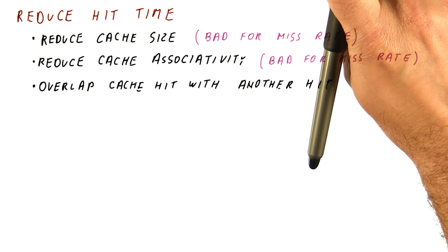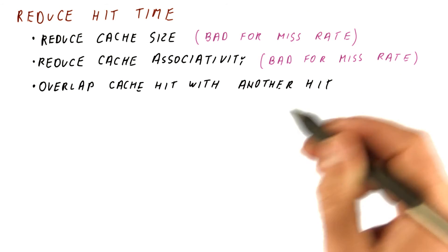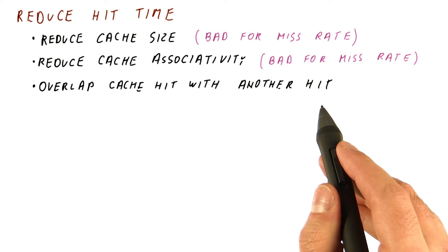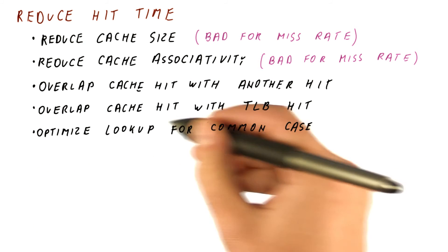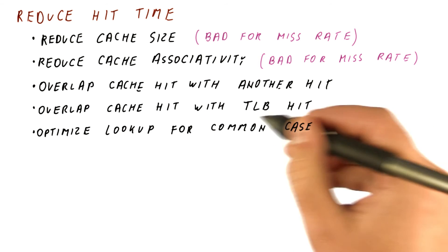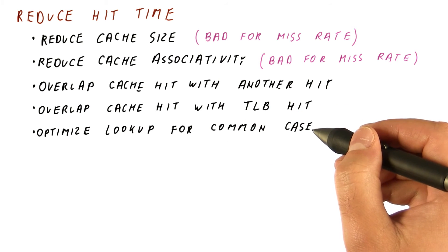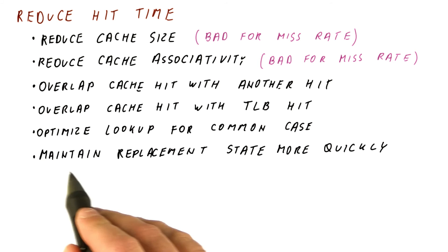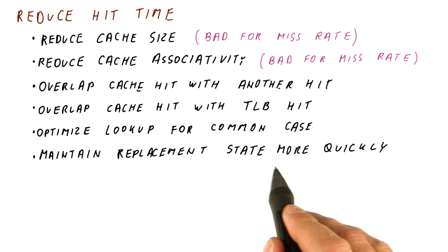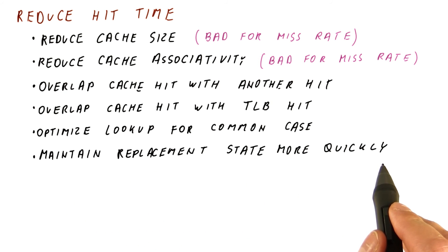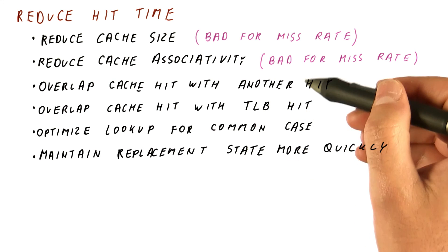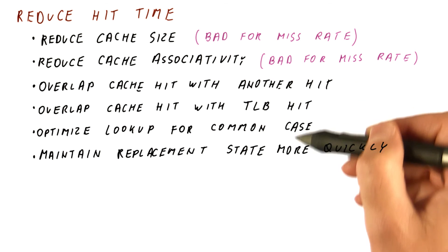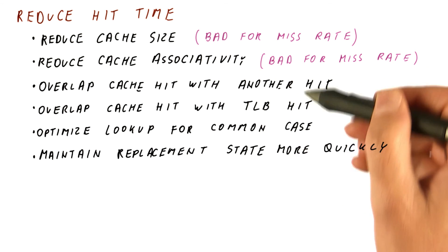The less simple methods for reducing hit time involve overlapping the cache hit with another hit, overlapping the cache hit with the TLB access, optimizing the lookups so that common cases get faster without sacrificing the uncommon case too much, and maintaining the replacement state in the cache more quickly. On hits, we need to update some state that we will need later for replacements, and we can make this more efficient. We will look at four methods that are trying to achieve these four things.